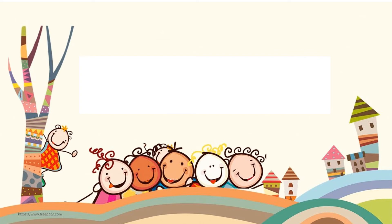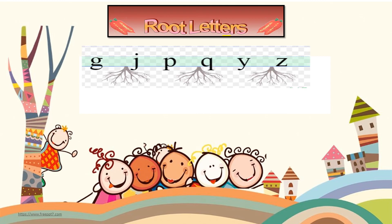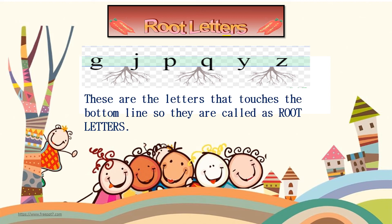The third one is the root letters. The root letters are G, J, P, Q, Y, Z. These are the letters that touch the bottom line, so they are called root letters.